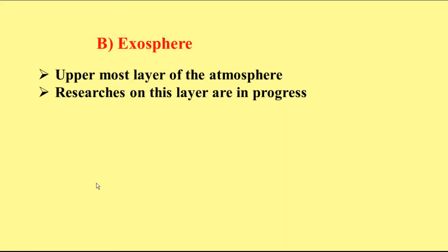The exosphere is the uppermost layer of the atmosphere, located above 400 kilometers. Research on this layer is still in progress and we do not know much about the exosphere yet, but the layer above 400 kilometers is called the exosphere.